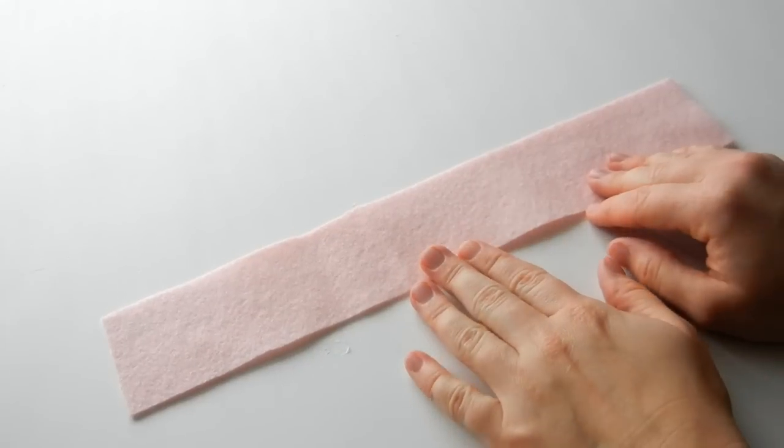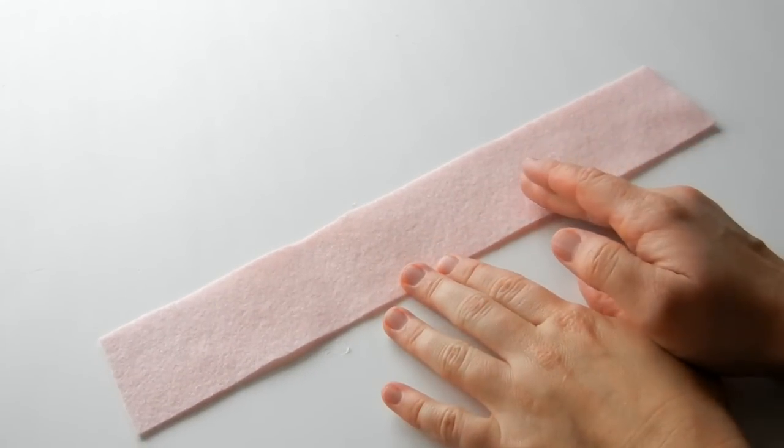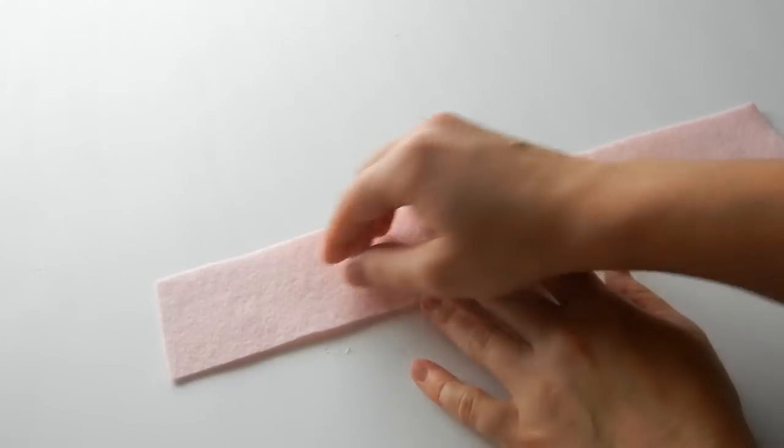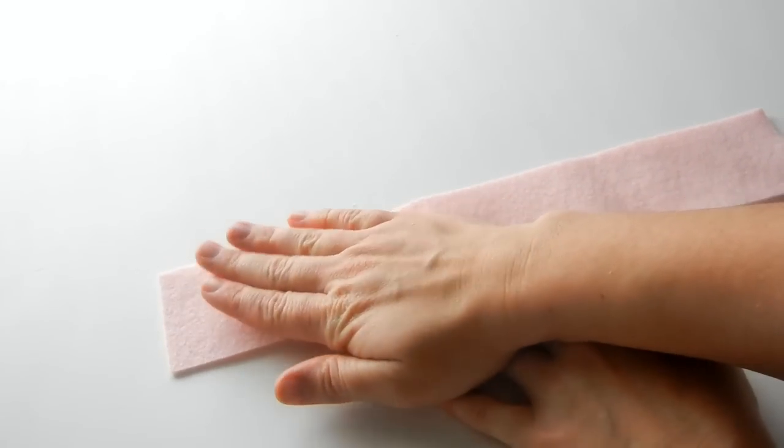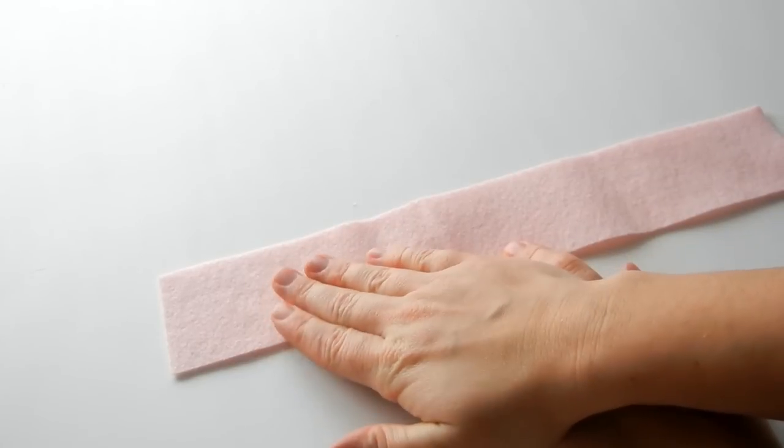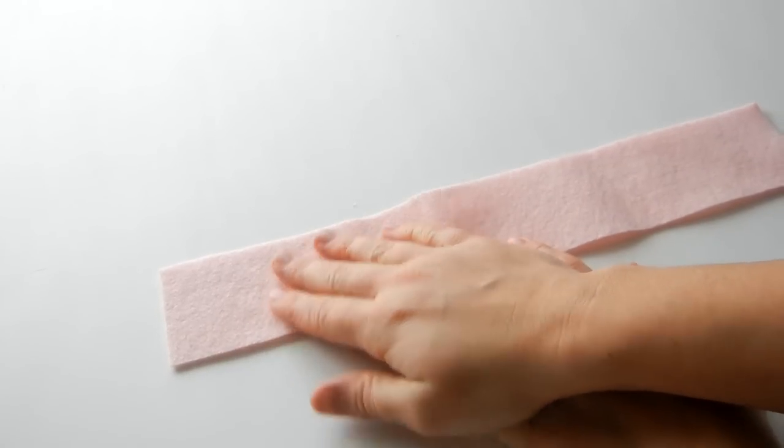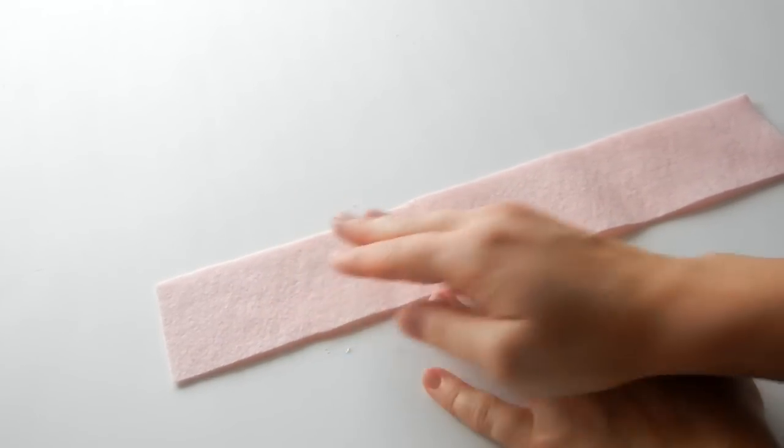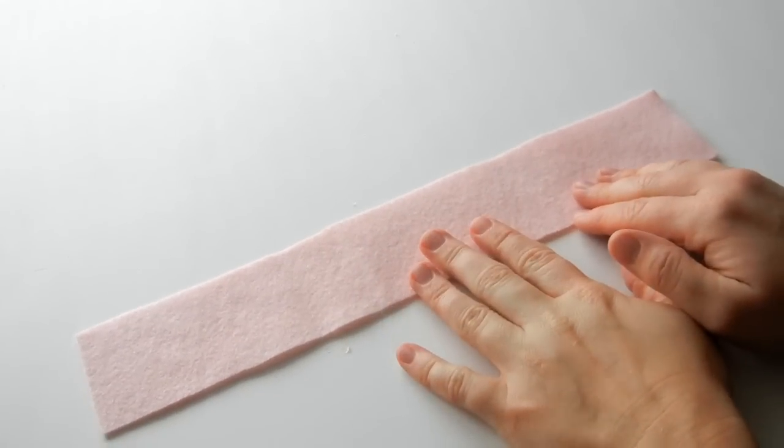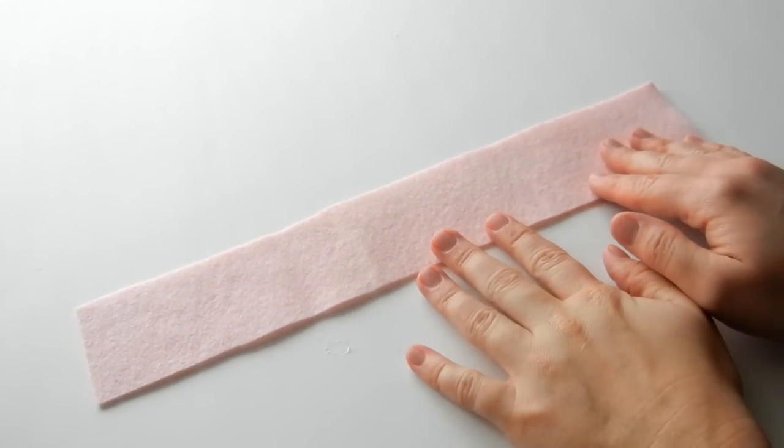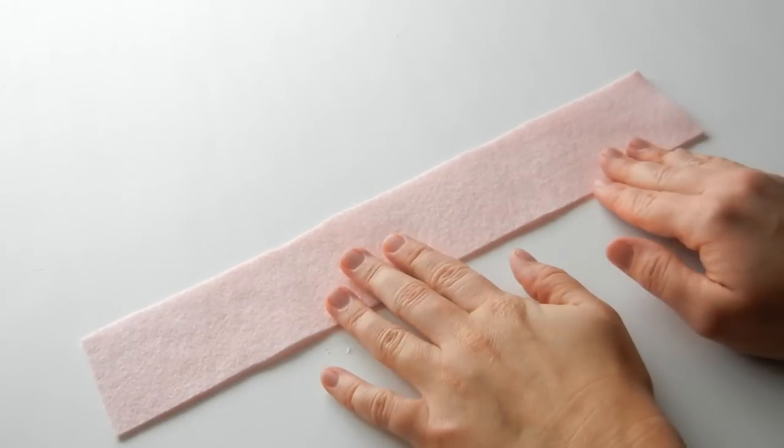But you can make them a lot smaller just by shortening the length. And this width you can adjust—if you want a bigger flower, make it a little bit bigger, or for a smaller flower, make it smaller. So just play around with it and see what measurements you'd like your flower to be. So once you've cut your strip,